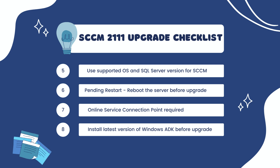Number 7, if there is a pending restart for the server, reboot the server and then begin the update installation. Number 8, the Configuration Manager should have an online service connection point configured. Number 9, the latest version of Windows ADK that you can install for SACM 2111 is Windows ADK for Windows 10 version 2004. If you have installed an older version of ADK and would be upgrading your Windows 10 to newer versions, you must upgrade your ADK.